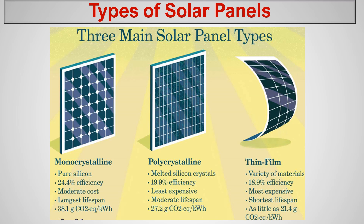We have three different types: monocrystalline, polycrystalline, and thin film. Monocrystalline is pure silicon, the efficiency of power production is 24.4%, the cost is moderate, and it has the longest lifespan. Polycrystalline is the older type — we use melted silicon crystals. Its efficiency is lower compared to monocrystalline, at 19.9%, and it is the least expensive with a moderate lifespan.